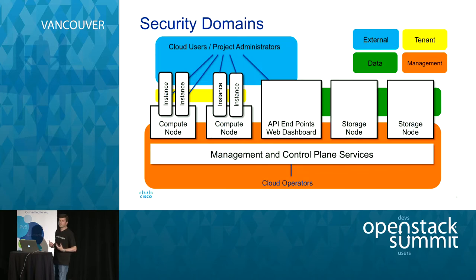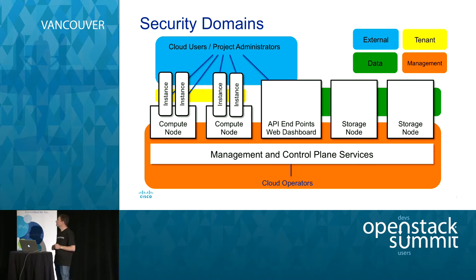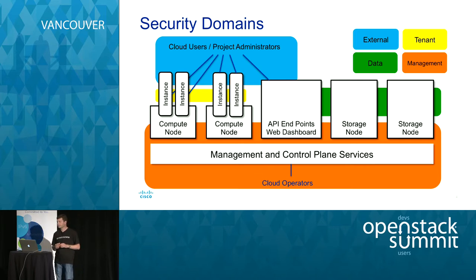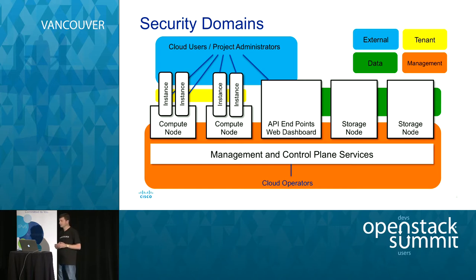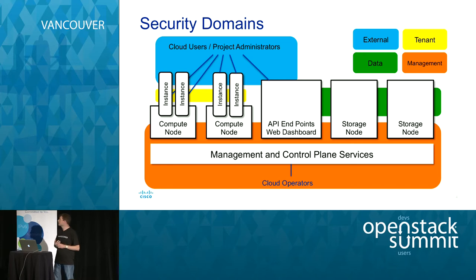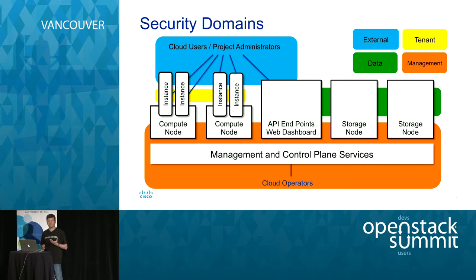To have this conversation, we need a shared framework and vocabulary to define what securing your OpenStack cloud means. A traditional way is to divide your cloud into security domains. There are four security domains. The first is the external domain — where your cloud users, project administrators, and all unauthorized users live. To enter your cloud, you want a strong set of APIs to protect the entrance. Below that is the tenant API, where the virtual machines and instances live.